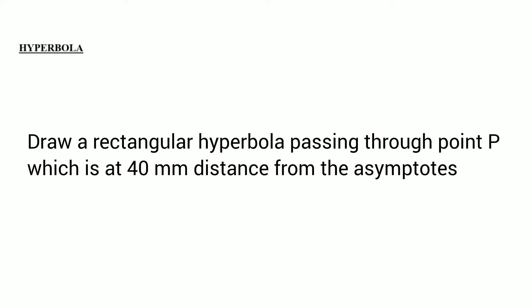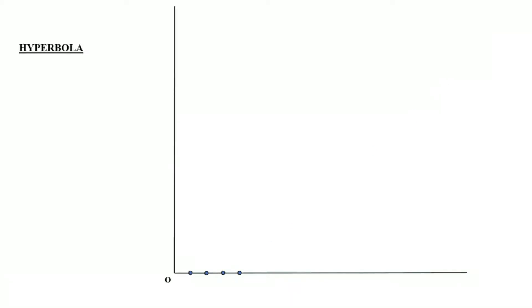To plot point P, first of all we need the x-axis and y-axis. So we will draw two perpendicular lines — they are called x-axis and y-axis. We can measure 40 mm on the x-axis and similarly 40 mm on the y-axis. With these measurements we can locate point P, which is 40 mm away from the x-axis and 40 mm away from the y-axis.